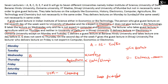C delivers a guest lecture at Banaras Hindu University and takes the lecture one day before D. So if D is on a given day, C must be on the day immediately before D, also with Banaras Hindu University. There are two possibilities — D on Friday with C on Thursday, or D on Saturday with C on Friday — but we cannot confirm yet.